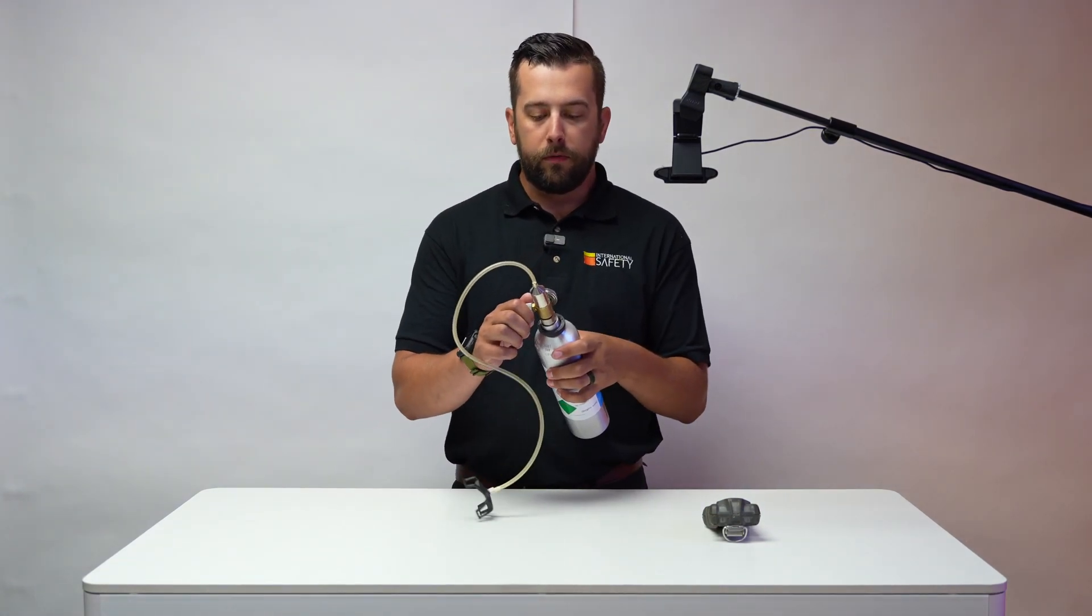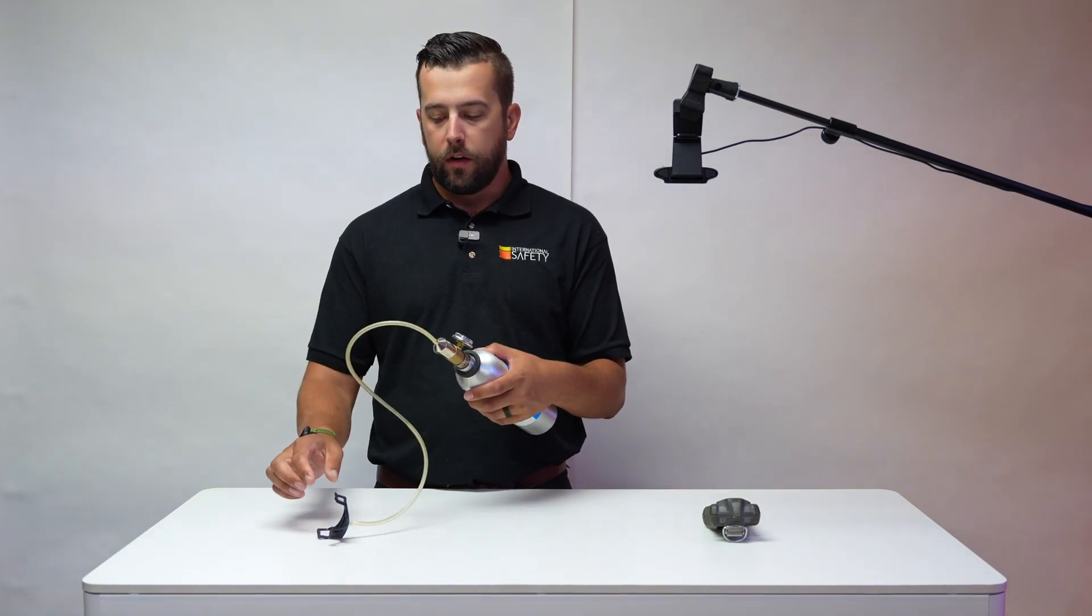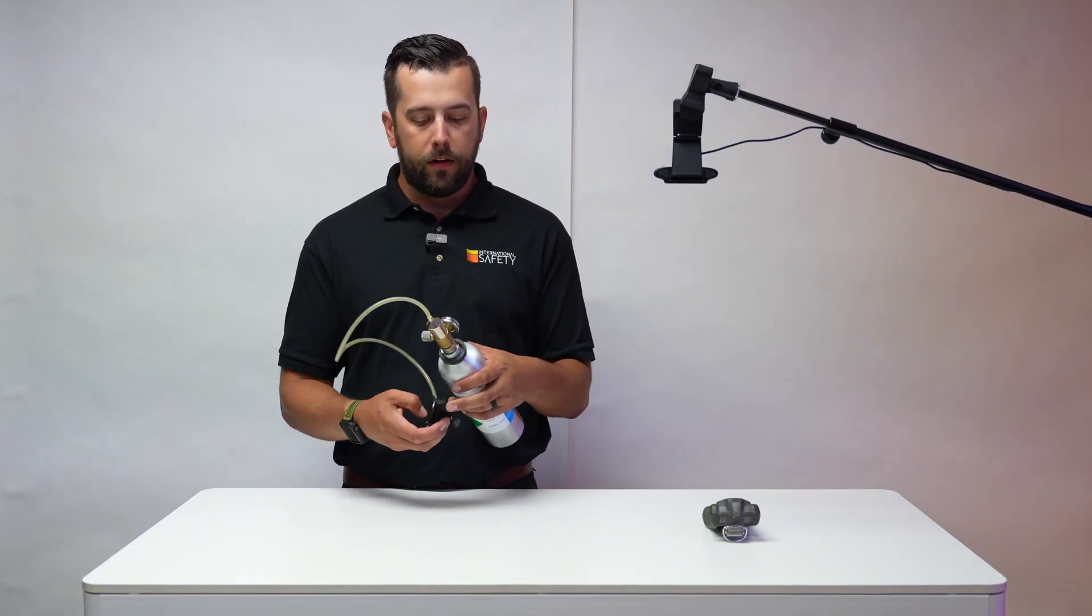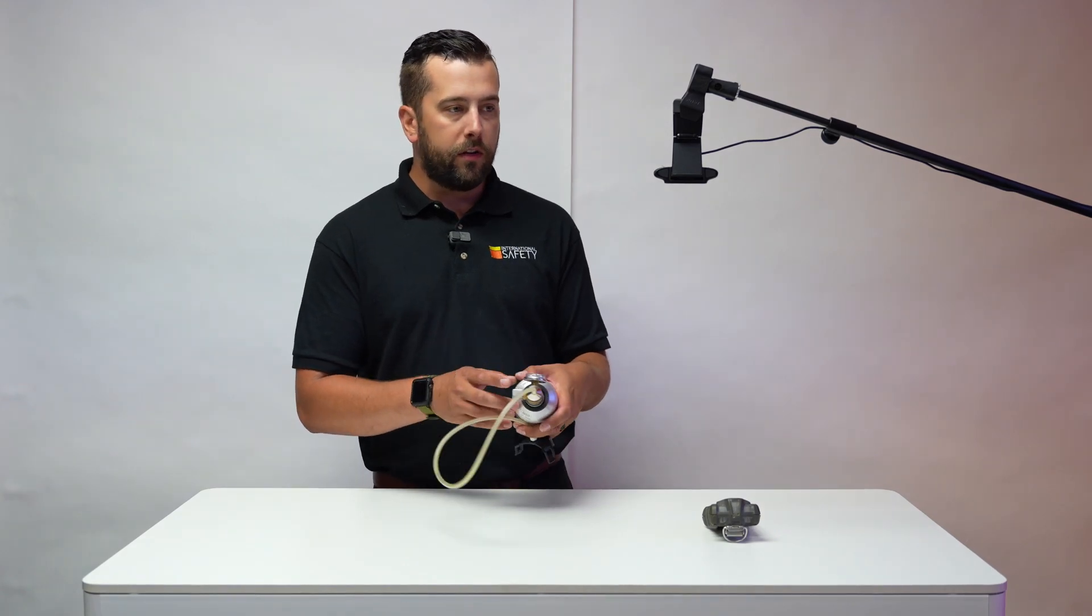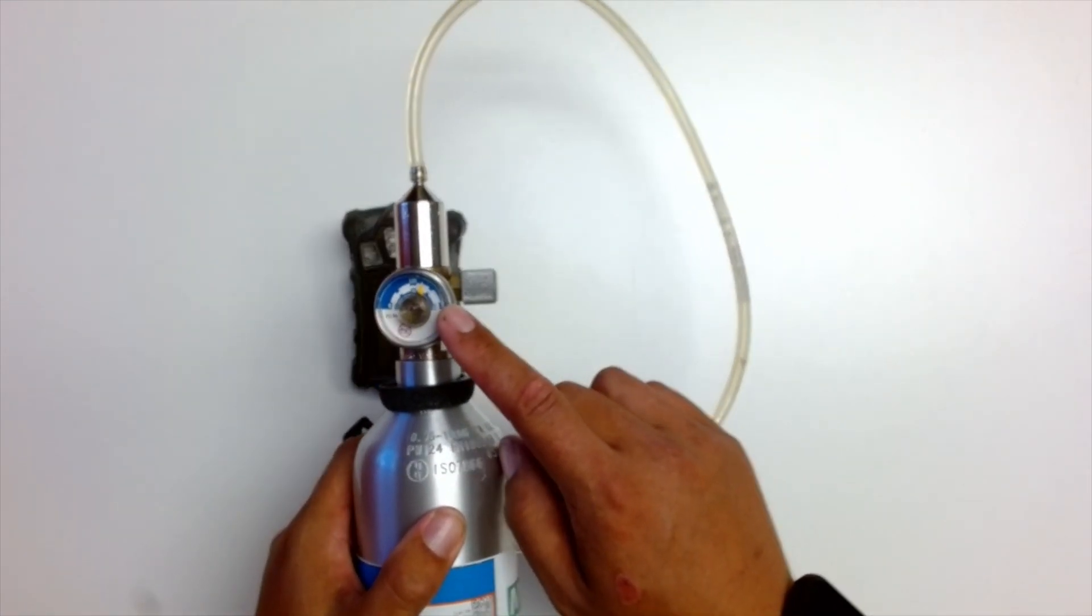What you want to do before you do that, just always make sure that your fixed flow regulator is off, otherwise the gas will start flowing right away, and also make sure that you do have calibration gas in the cylinder as well. You can see it on the dial here.